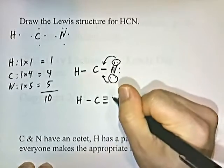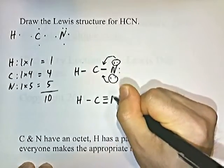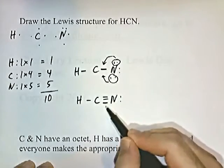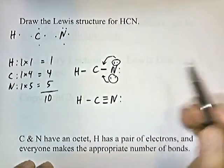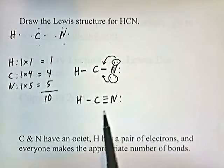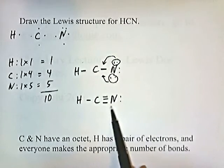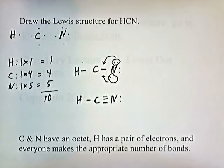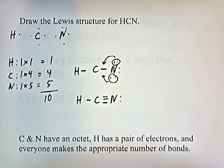Moving a pair of electrons from nitrogen in between carbon and nitrogen, and another pair, gives us a triple bond. Now carbon has eight electrons around it, nitrogen has eight electrons around it. Carbon forms four bonds as predicted, nitrogen forms three bonds as predicted, and hydrogen forms one bond. Carbon and nitrogen have an octet, hydrogen has a pair of electrons, and everyone makes the appropriate number of bonds. Everybody's happy.